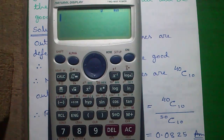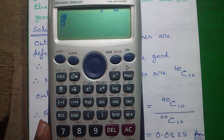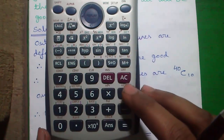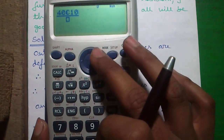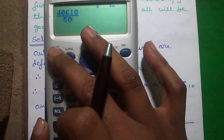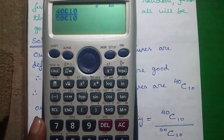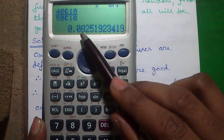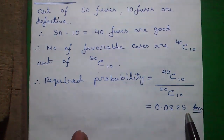To calculate this, I will use the combination operator and the fractional operator of this calculator. Press the fraction button, enter 40, then press Shift and the divide button to get the combination operator. Enter 40 combination 10 in the numerator, divided by 50, then Shift and divide, enter 10, and press equals. You will get the required probability: 0.0825.